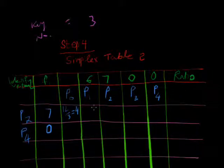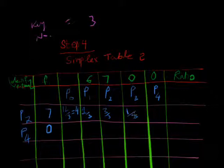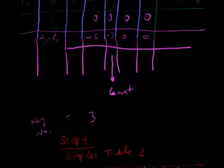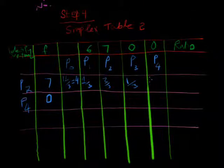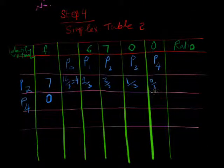Same way we write here 2 divide 3 and 3 divide 3, 1 divide 3, and for P4 is 0, 0 divide 3 will be 0.